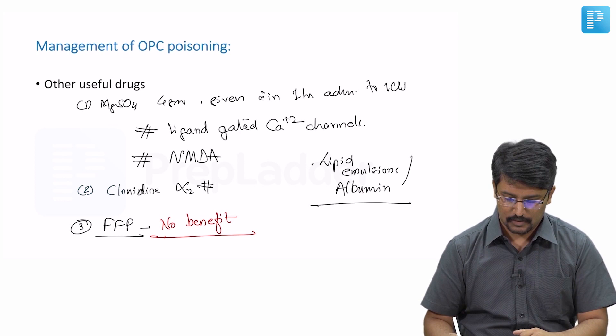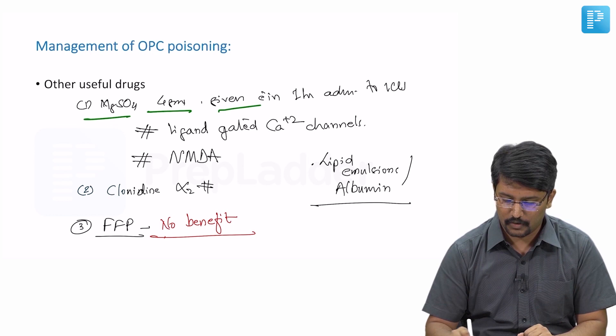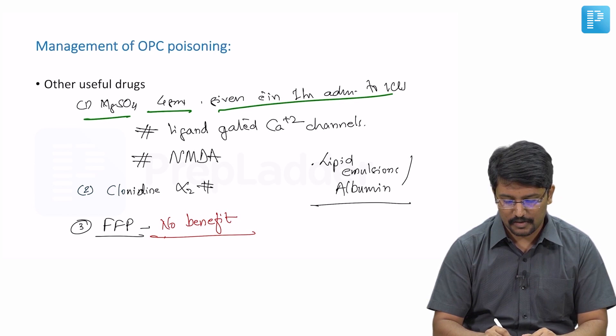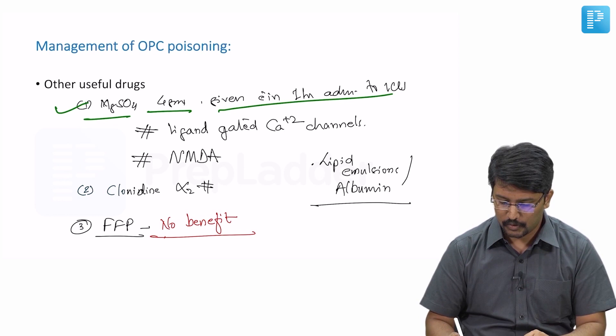There are other useful drugs also which we need to discuss. The first one is magnesium sulfate, which given at 4 grams within 1 hour of admission to ICU is associated with reduced risk of mortality. So another drug apart from atropine, which is proven effective in reducing mortality to some extent.